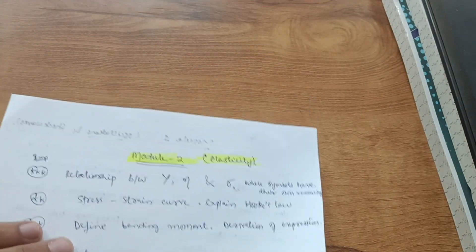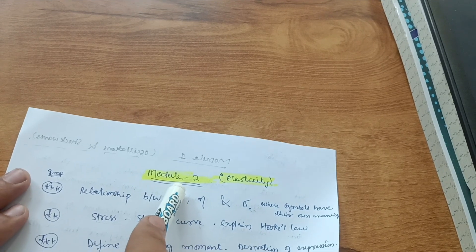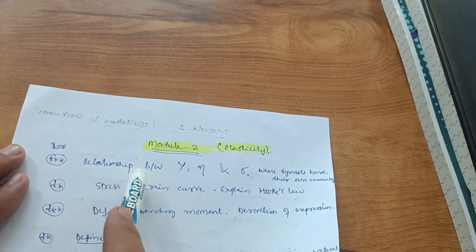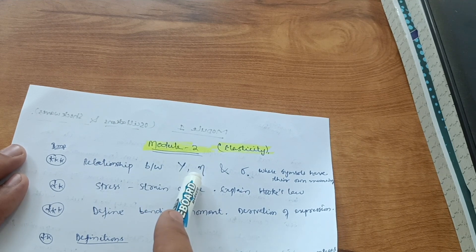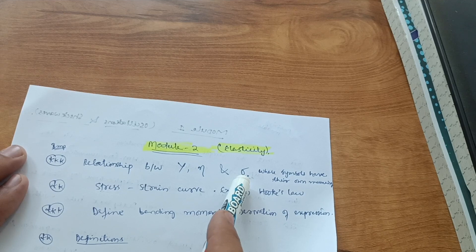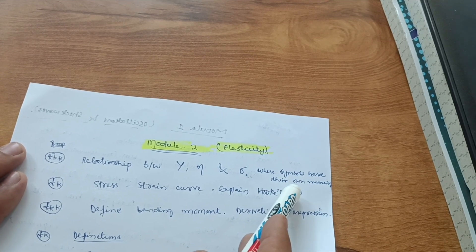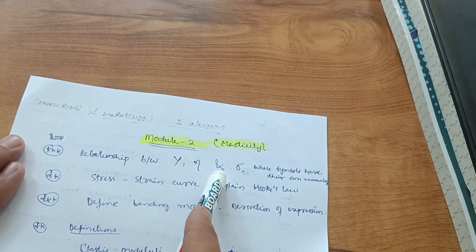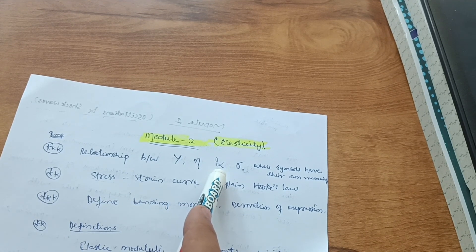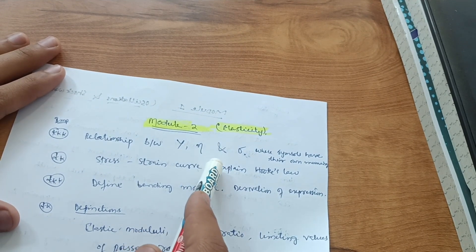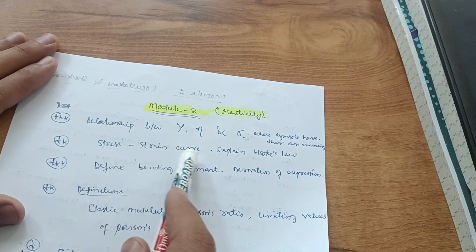Then module second comes up: elasticity. It is also a simpler one with some derivations of relationships. The important one is relationship between Young's modulus, rigidity modulus, and Poisson's ratio, that is Y, eta, and sigma, where each has their own meaning. Sometimes they will give Young's modulus, bulk modulus, and Poisson's ratio. Go through these relationships so it will become easy to cover this module.